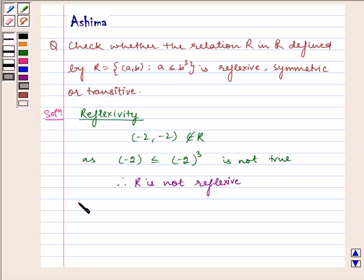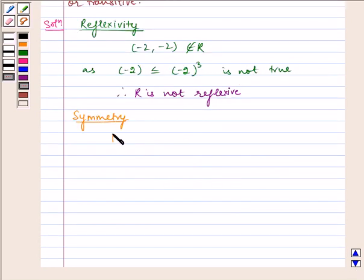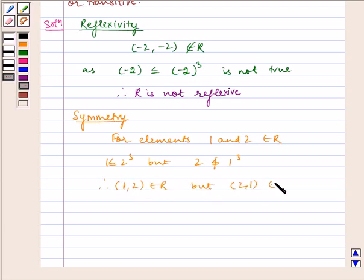Now let us check for symmetry. For elements 1 and 2 belonging to R, we have 1 is less than or equal to 2³, but 2 is not less than or equal to 1³. Therefore, (1,2) belongs to R but (2,1) does not belong to R. Therefore, R is not symmetric.